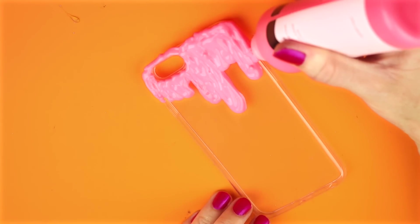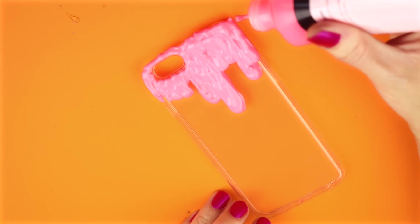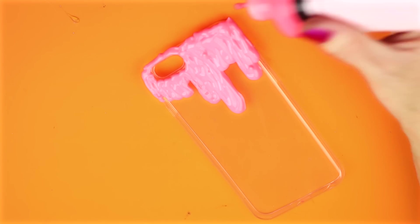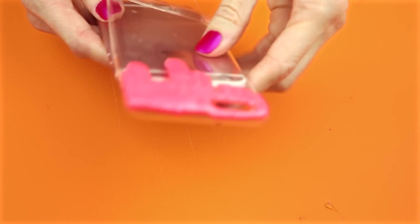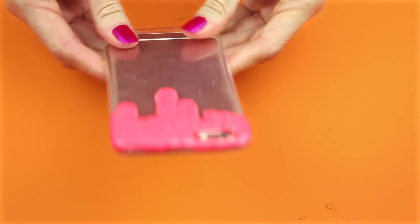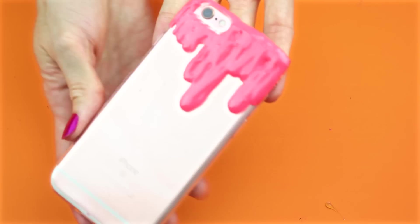Once you have the slime look the way that you want it, set that aside and let it dry for about 24 hours. Here is mine after it was dry. Then you can just add your phone case onto your phone. And that is how you make this easy DIY slime phone case.